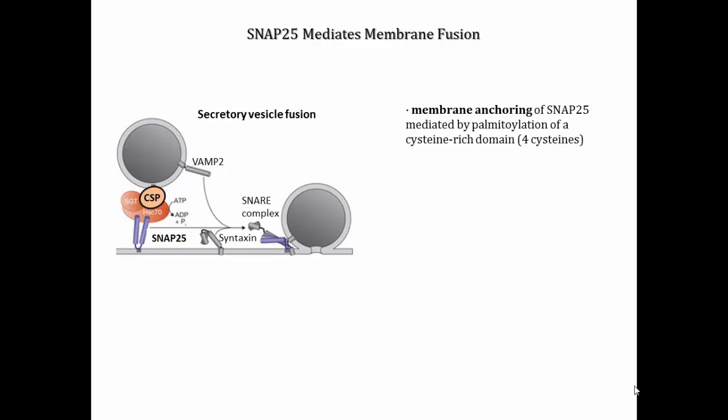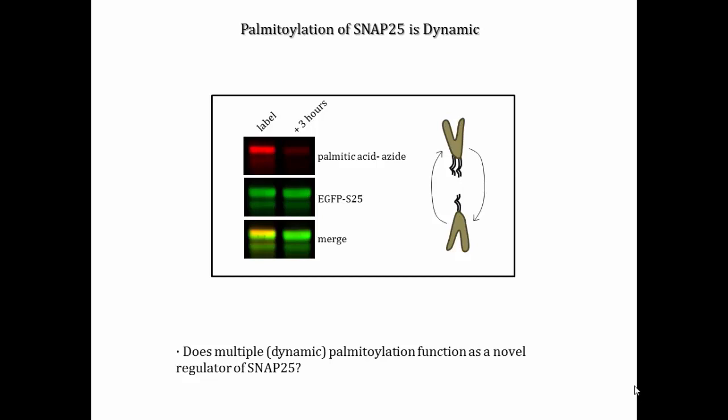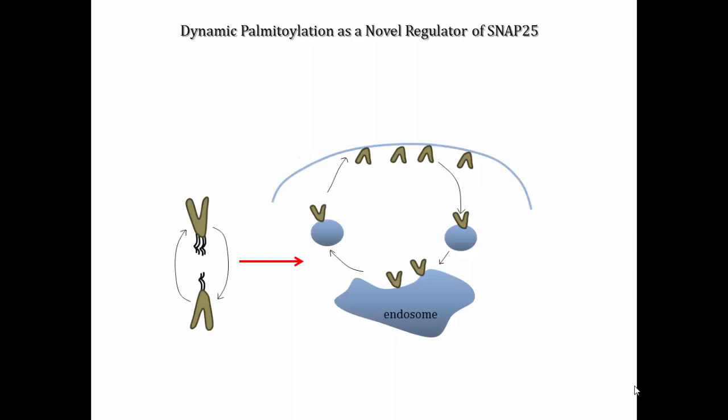However, the palmitoylation of multiple cysteines in SNAP25 and our observations that the palmitoylation of this protein is dynamic — shown in this slide through the use of click chemistry with palmitic acid azide — suggests that palmitoylation may exert additional regulatory effects on this protein. Indeed, a series of experiments performed in our lab has shown that palmitoylation of SNAP25 controls this protein by several mechanisms, which will be summarized on the following slide.